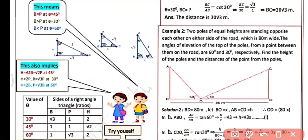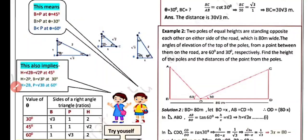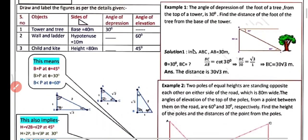Comparing the data: when base equals perpendicular, theta is 45°. When theta is 30°, base is greater than perpendicular. When theta is 60°, base is less than perpendicular. We will now see three examples to understand the situations before doing the practice questions.